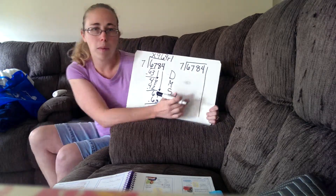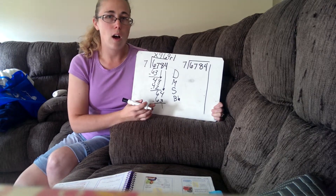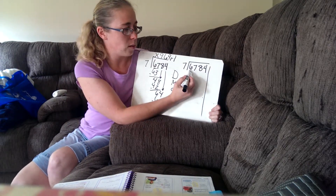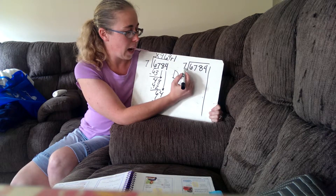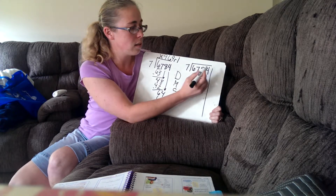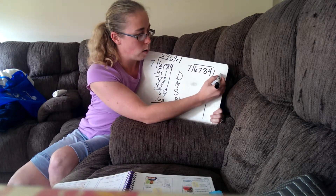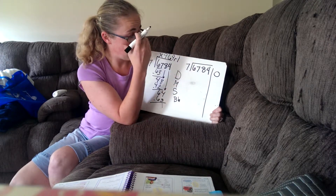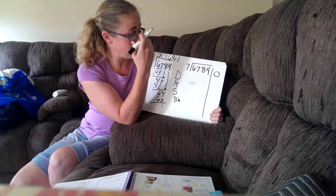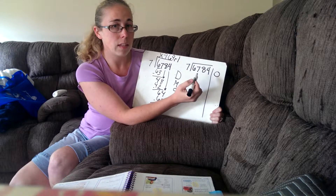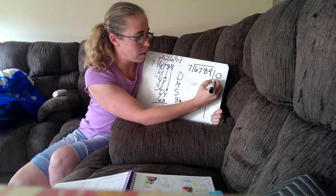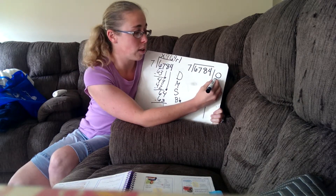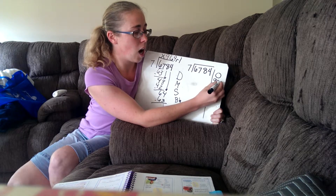Now I'm going to do this problem the other way that Miss Berry taught you — using partial quotients for long division. I'm going to start in the thousands place. Can I divide seven into the thousands place? No, it goes in zero times. So, let's start working in the hundreds place. Can I divide seven into 67? Yes, I can do it nine times. Only, it's not nine because I'm working in the hundreds spot — it's 900.